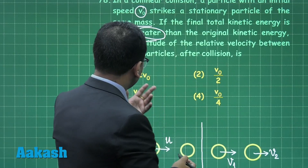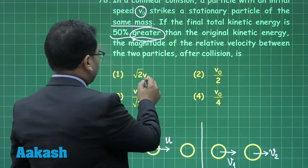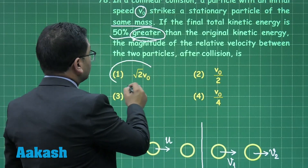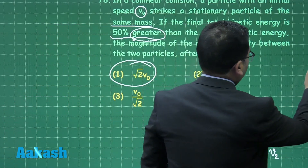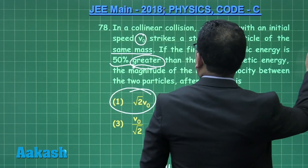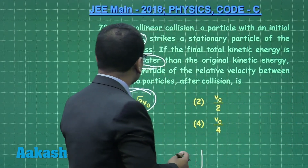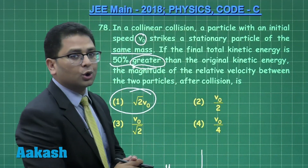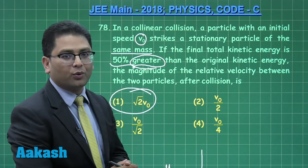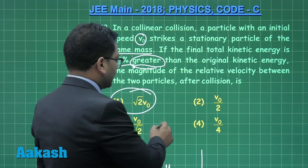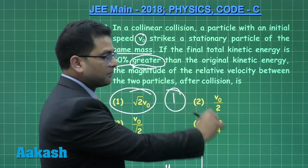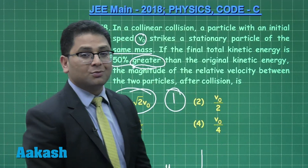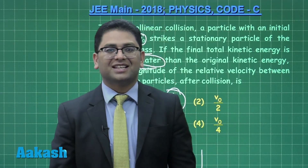The relative velocity v1 minus v2 comes out to be √2 times u, which equals √2 v₀. Therefore, the correct option for question 78 is option 1.